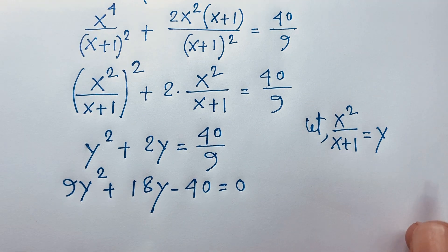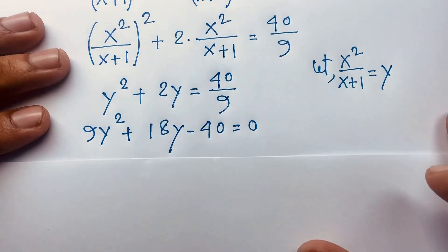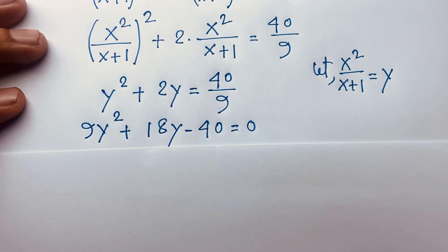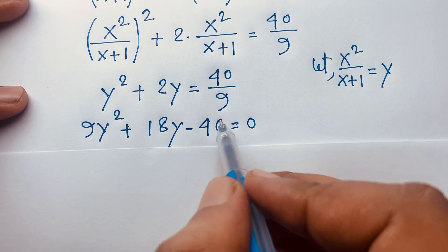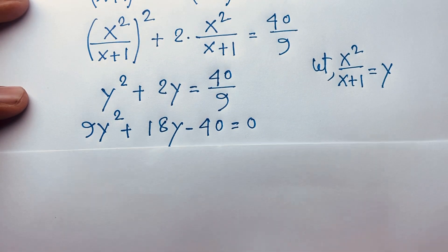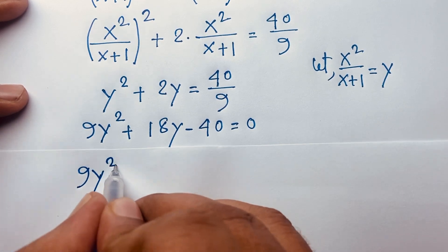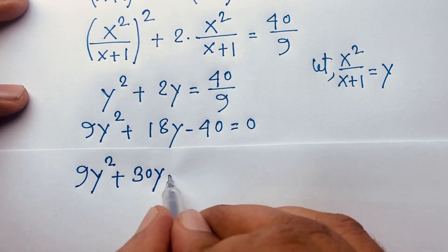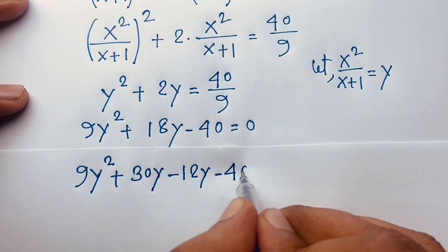Now how to do middle-term factoring on this equation: 9y² + 18y − 40 = 0. We need two numbers whose product is 9 × 40 = 360, giving us 9y² + 30y − 12y − 40 = 0.